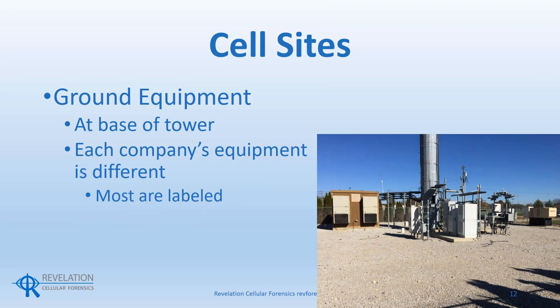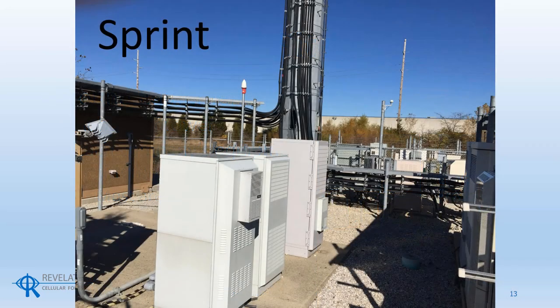The ground equipment resides at the base of the tower. There will be ground equipment for each carrier having antennas on the tower. In this case, the tower has antennas for three companies, so there are three ground equipment units at the base of the tower. One part of our investigation should be to go to each cell site that is critical to our investigation. We should especially strive to survey each tower used around the time of the crime. Each carrier uses different types of ground equipment, and we can identify each carrier's equipment by data plates or by the type of equipment. Sprint's equipment is usually in gray metal cabinets and doesn't have any data plates or markings. Additionally, Sprint uses a white cone GPS antenna with a red base — Sprint is the only company I've seen that uses the red base on the GPS antenna.